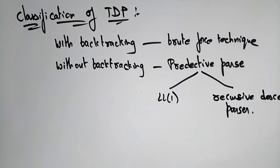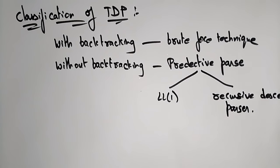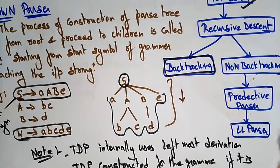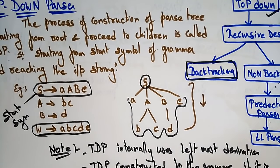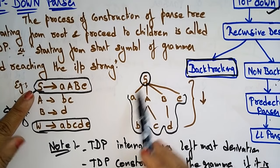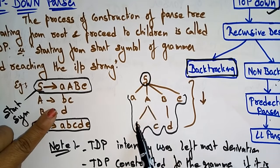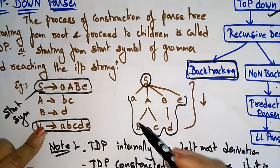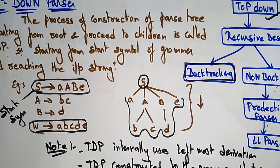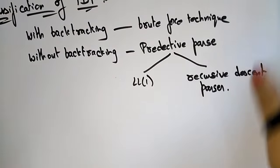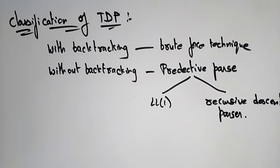Let me clearly explain what recursive descent is. Recursive descent covers both backtracking and non-backtracking. Up to now we discussed what a top-down parser is and how the grammar is constructed — using the starting symbol you parse the tree, substituting non-terminals with terminals following the top-down process. The top-down process is of two types: backtracking and non-backtracking, using a recursive descent concept.